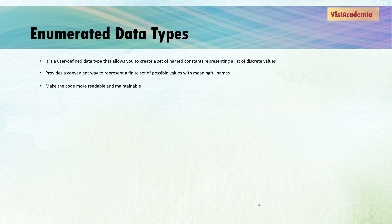In programming, enumerated data types are used to define a set of named constants for a specific purpose. It's like creating a little dictionary to represent a group of related items. This makes the code easier to understand and helps prevent mistakes because you are using meaningful names for arbitrary values.